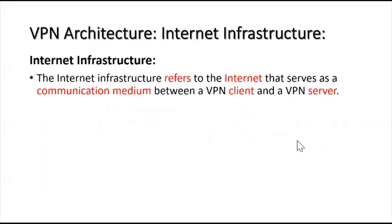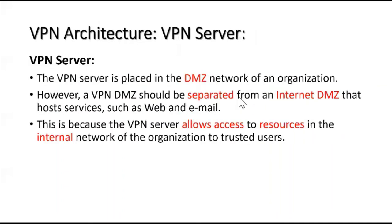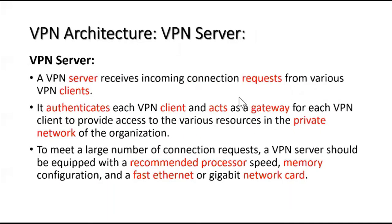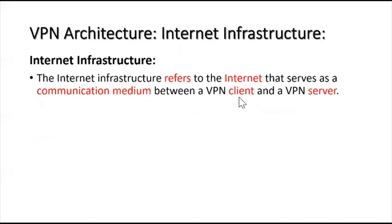The last component is internet infrastructure, which refers to the public internet that serves as the communication medium between the VPN client and VPN server. These are the three VPN architecture components: VPN client, VPN server, and internet infrastructure.